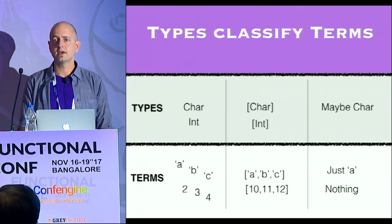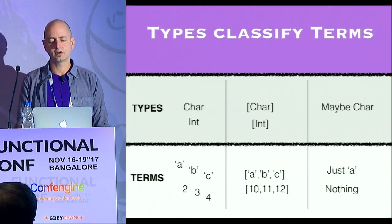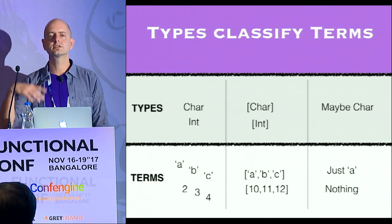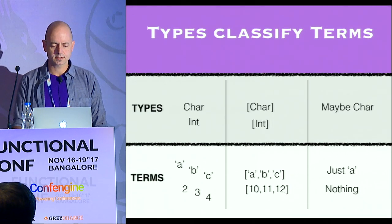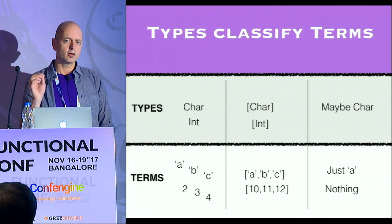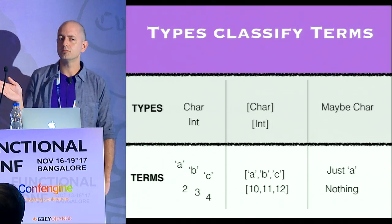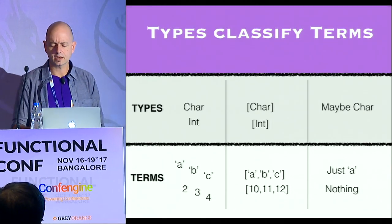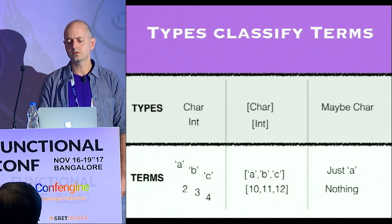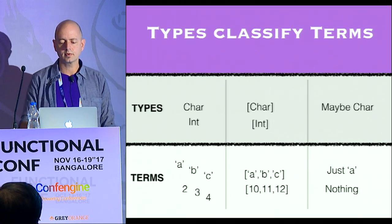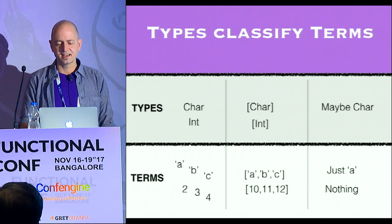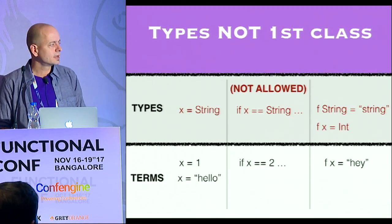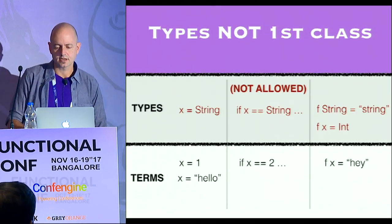The Haskell type system is amazing if you haven't seen it before. If you're used to Java or other statically typed languages, it will blow your mind. Although ten years later, it will blow your mind less, because those languages have really drawn in a lot of the great things about Haskell.